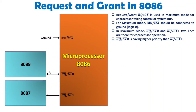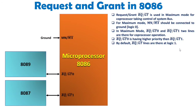If bus requests arrive at 8086 simultaneously on both terminals, the terminal RQ bar/GT bar 0 will be serviced first, as it has higher priority. You should also know that this line RQ bar/GT bar is at logic 1 by default. So we are sending logic 0 pulses — those active low pulses are the signals we need to consider.